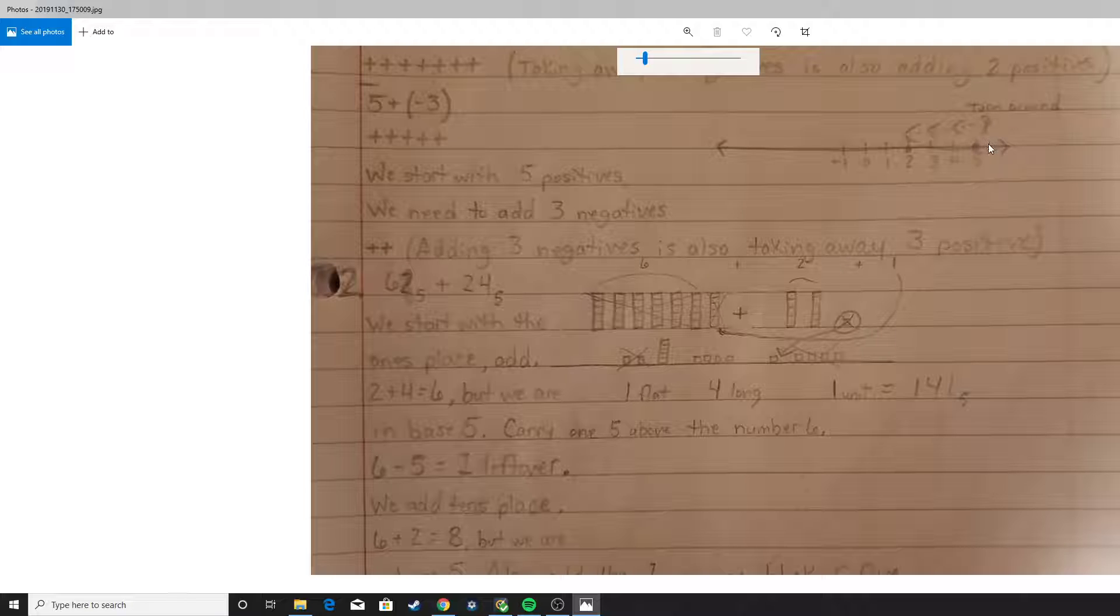The number line shows right here that if we start at 5 on the number line, and our guy's facing towards the positive direction this way, and we're adding negative 3, he's got to turn around and walk backwards 3 spaces. So that's to 4, to 3, and then to 2. We end at 2 right there, and that gives us our answer.